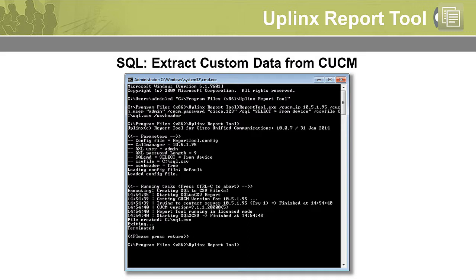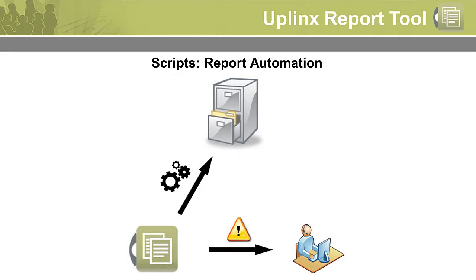Use the command line to extract custom data from Cisco Unified Communications Manager via SQL. The report tool can also be controlled through scripts, allowing you to build your own reporting portal and alerting system.